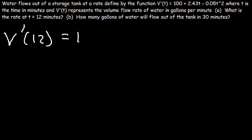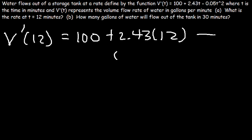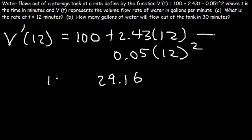So it's going to be 100 plus 2.43 times 12 minus 0.05 times 12 squared. So I'm going to do this one step at a time. 2.43 times 12 is about 29.16. 12 squared times 0.05 is 7.2.